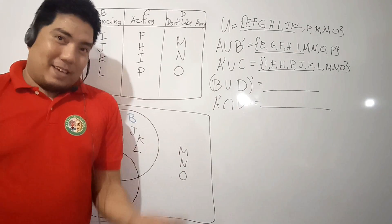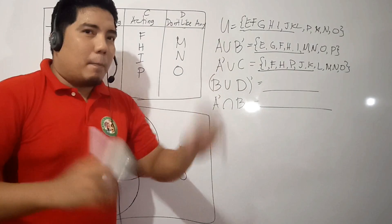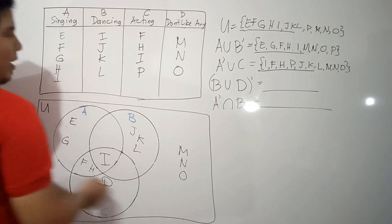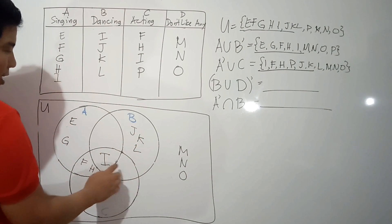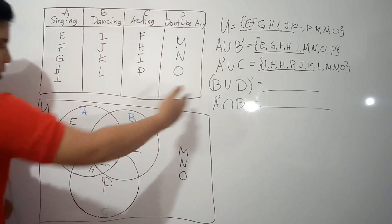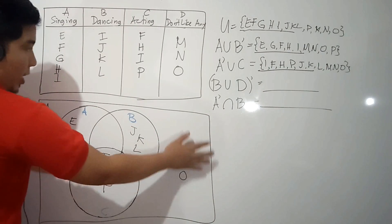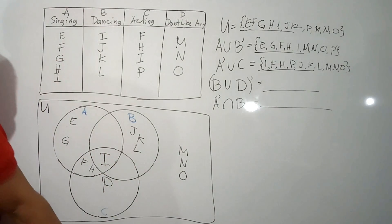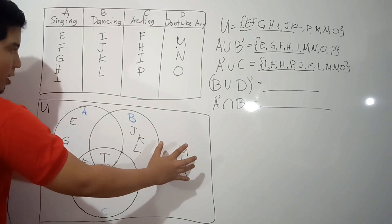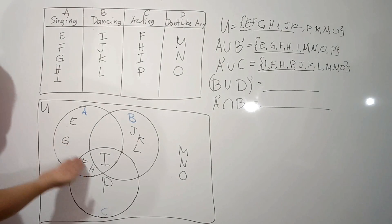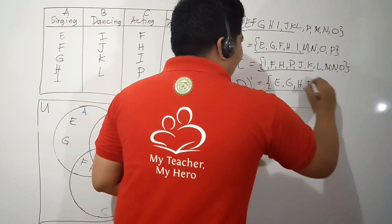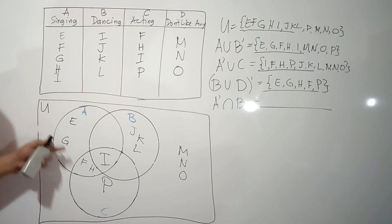Here is a more challenging question: the complement of B union D. Set D and set B together include G, K, L, I, M, and O. We consider this in terms of the universal set — anything that is part of B and D is not part of the answer. So the complement of B union D contains only E, G, F, H, and P.